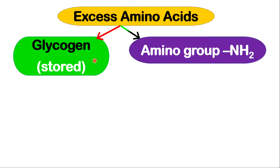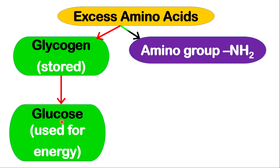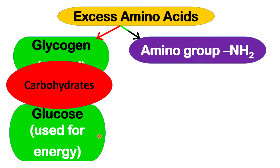Glycogen will be stored in the liver, and when the body requires glucose, the glycogen will be converted to glucose. Glucose can then be used to produce energy within the cells. Note that glucose and glycogen are both carbohydrates — glycogen is a polysaccharide, while glucose is a monosaccharide.